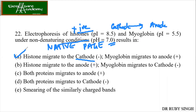If you know that histones are positively charged, it is very easy to get the answer. The amino acids which make histones positively charged are arginine and lysine. Please remember: histones are positively charged because of the presence of arginine and lysine.